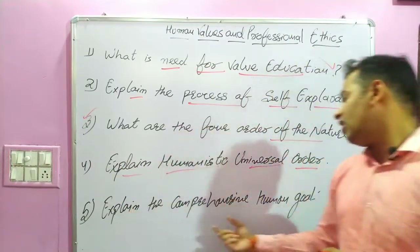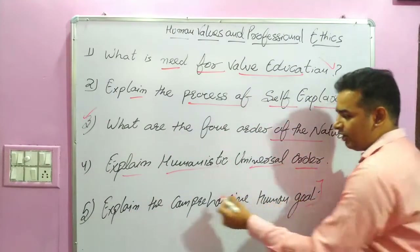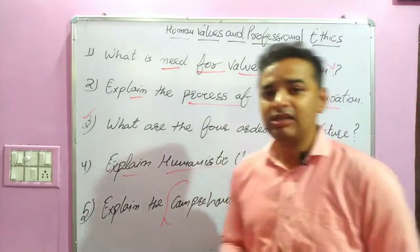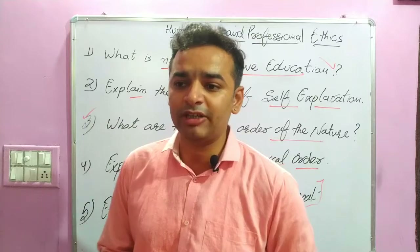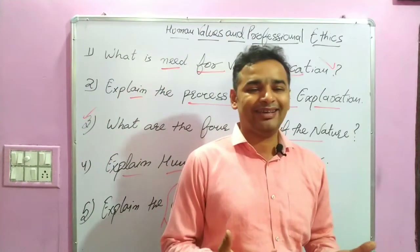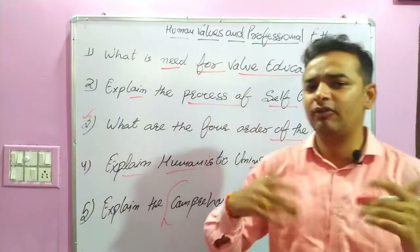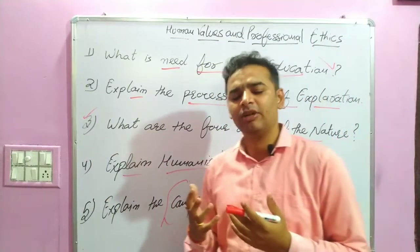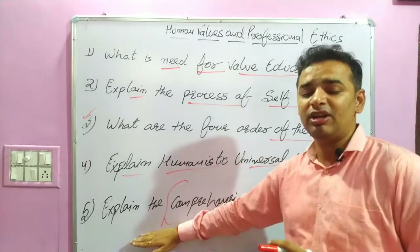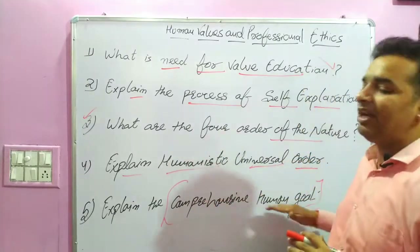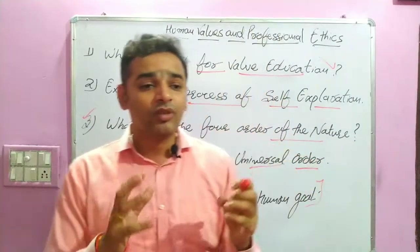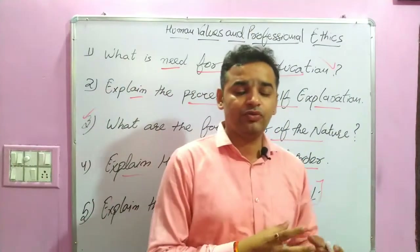The fifth question is: Explain the comprehensive human goal. What is our human life? What is the comprehensive human goal? Why do we live on this earth — what is our final destination? This kind of question is asked, and the examiner wants to know about the comprehensive human goal. We have prepared separate videos for each of these questions.